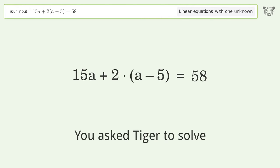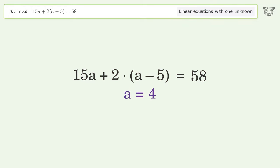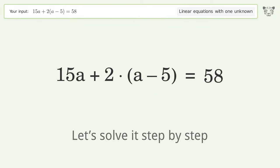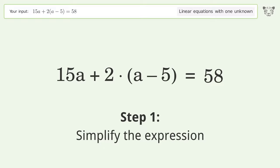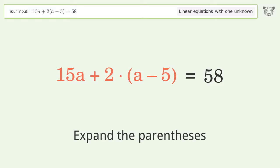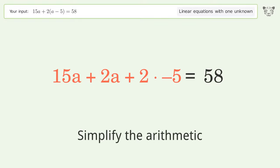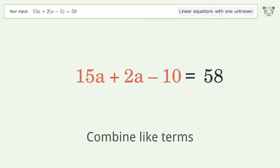You asked Tiger to solve this. This deals with linear equations with one unknown. The final result is a equals 4. Let's solve it step by step. Simplify the expression, expand the parentheses, simplify the arithmetic, combine like terms.